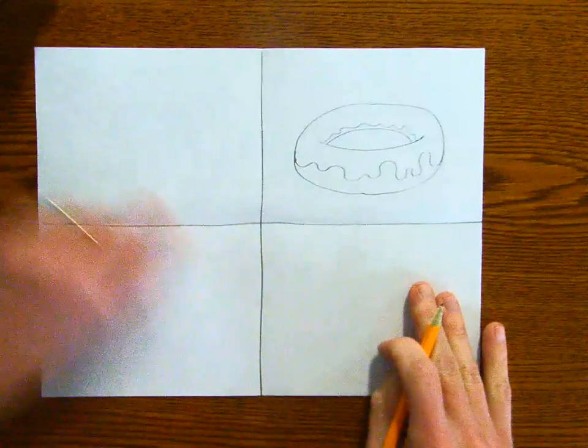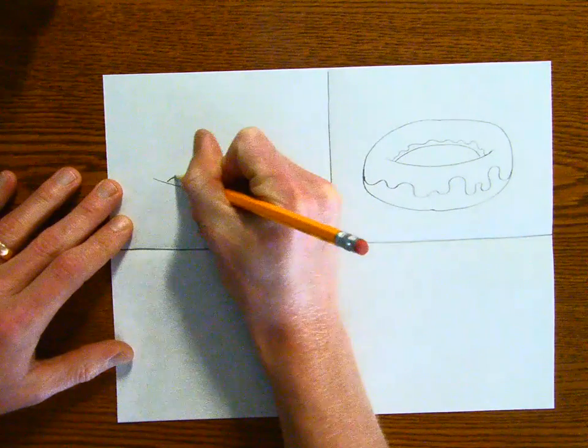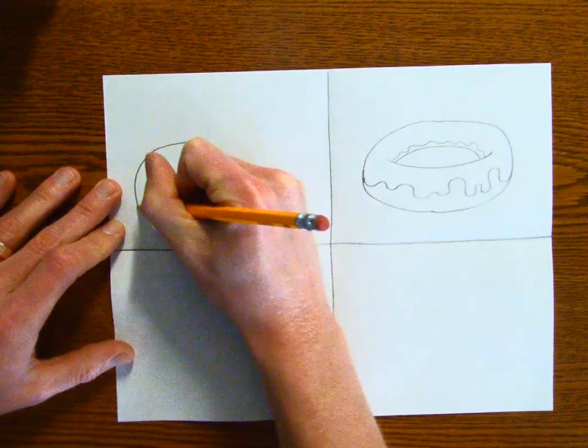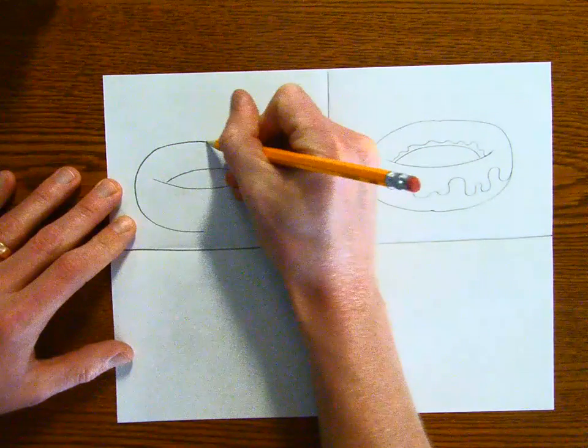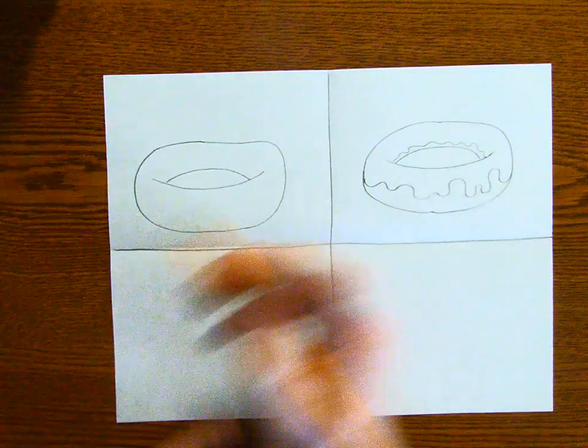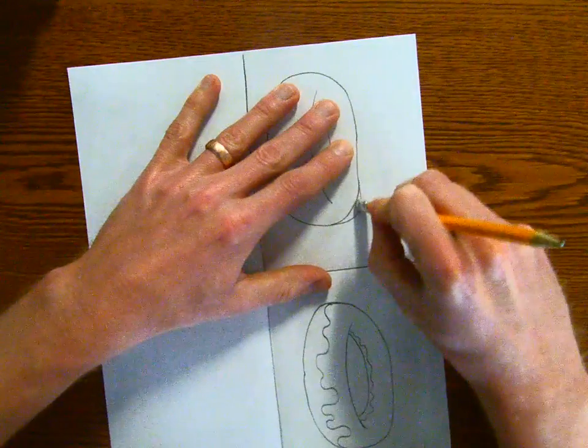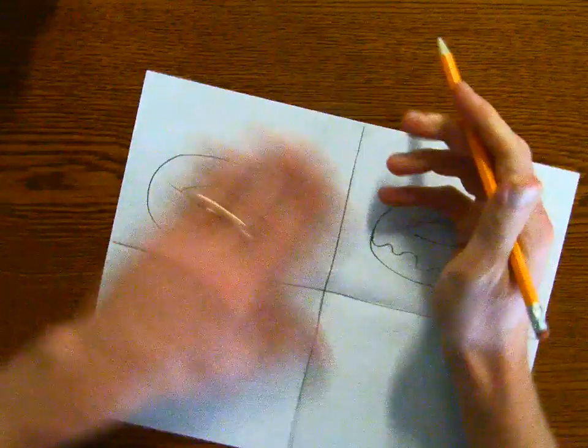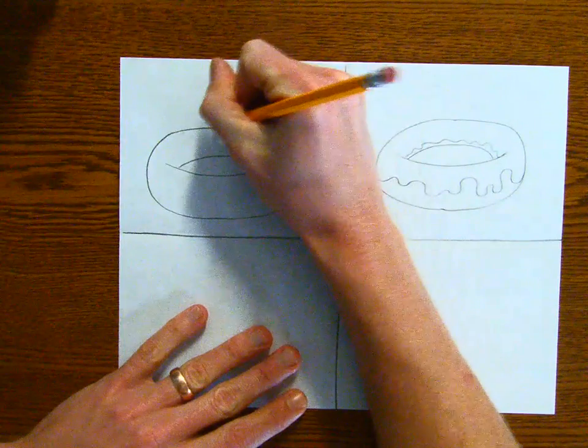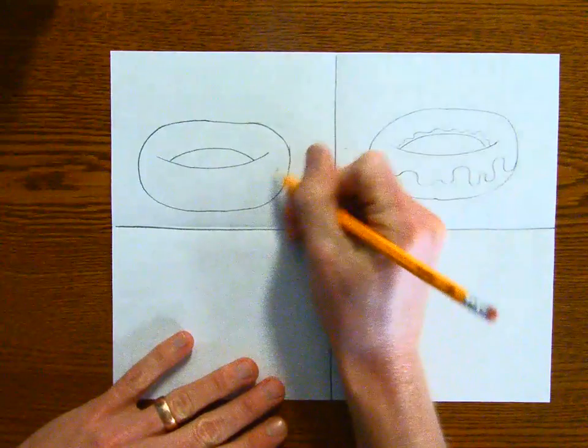So pick a new spot and we're going to repeat this step again. We're just going to skip the frosting step, so exact same steps. That's a little, got a little bump up here, so I'm going to clean that up. Now I did not say this earlier, but make sure you do this one lightly because we are going to erase some of it.